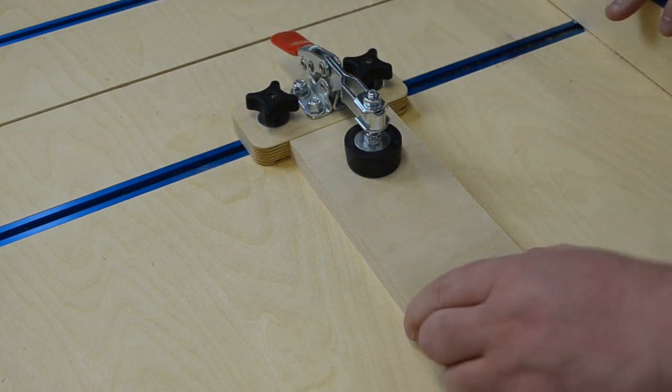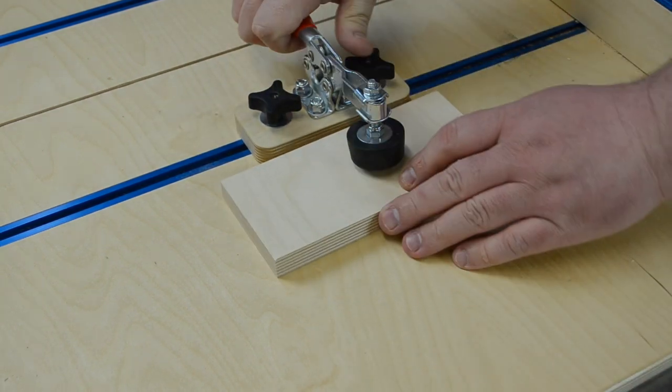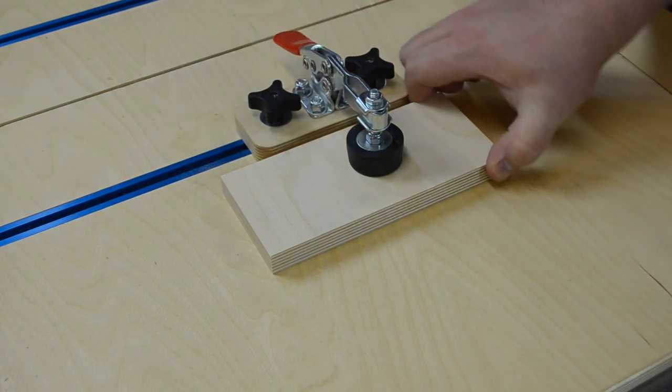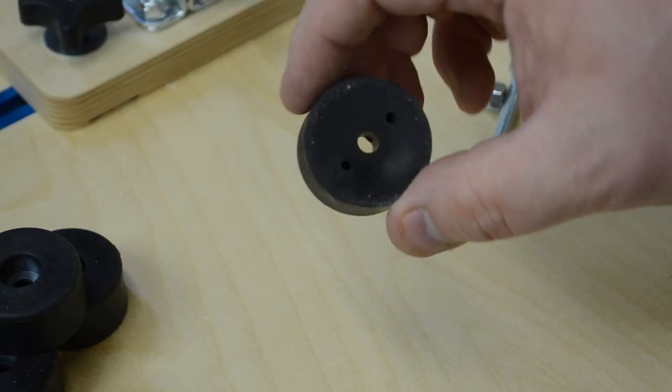I came up with a clever solution to take a pre-molded rubber part and turn it into a larger foot to secure the work piece a whole lot better. And they're pretty inexpensive, only about 50 cents a piece.